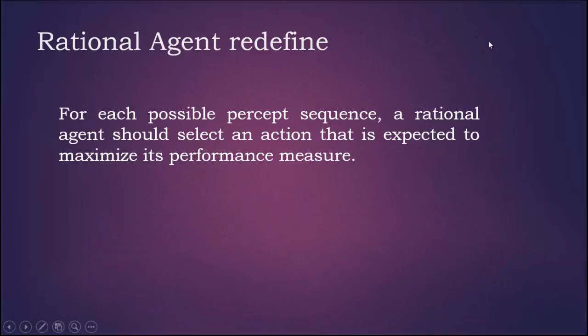So finally, we need to redefine the rationality of an intelligent agent. In a nutshell: for each possible percept sequence, a rational agent should select an action that is expected to maximize its performance measure.